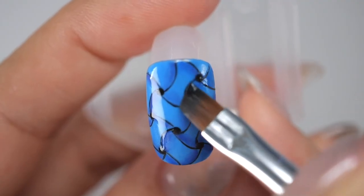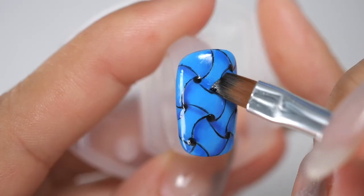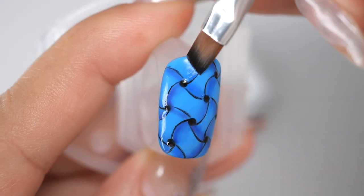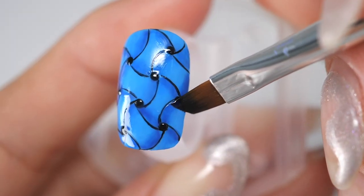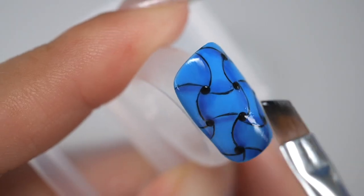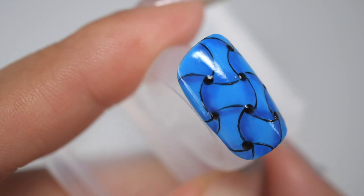This time, I used a matte navy, but a sheer type with a translucent can also be used. If anything, the sheer type is easier to create a gradation, so please try whichever you prefer.